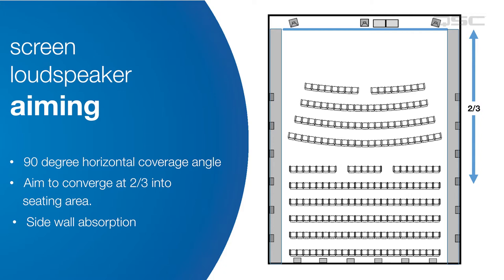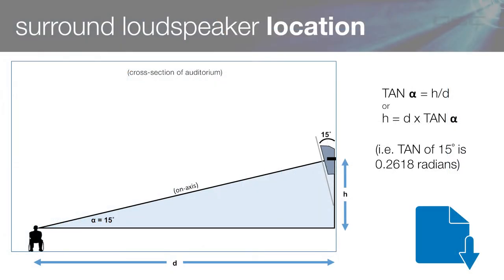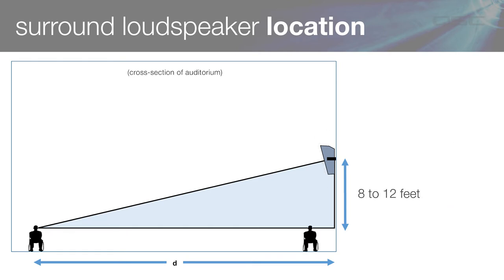Now let's talk about the location and aiming of surround speakers. These are aimed across the room toward the farthest listener and should be mounted high enough so they're out of reach, but not so high that they don't cover the seating directly below the loudspeaker. I'm not going to bore you with the math of calculating loudspeaker height here—you could take a look at the handout.